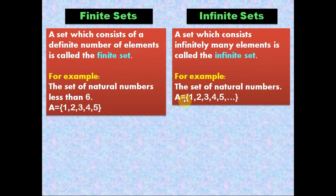Here we have a set A which has natural numbers like 1, 2, 3, 4, 5, and so on. So this set continues on, therefore we call this set an infinite set.